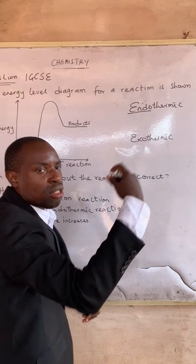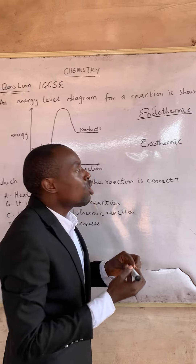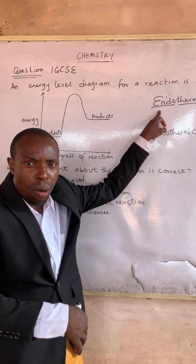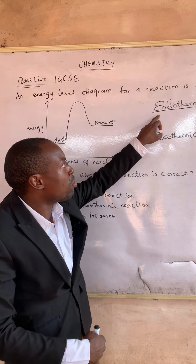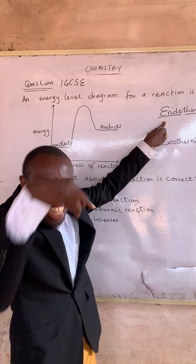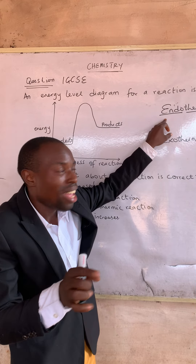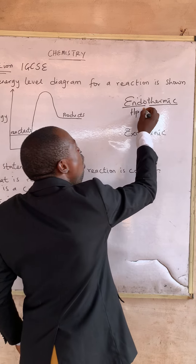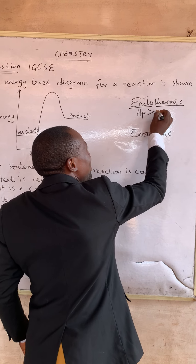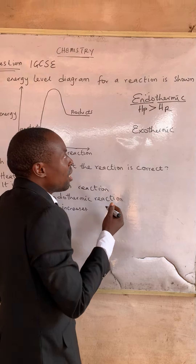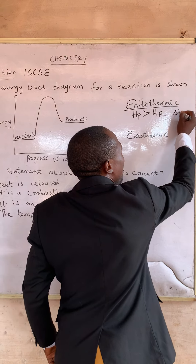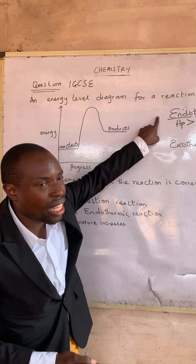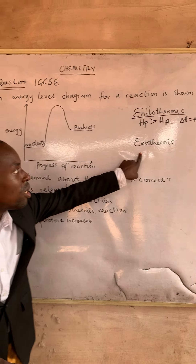Endo simply means absorbed, and thermic means heat. So in the case of an endothermic reaction, heat is absorbed from the surrounding into the system. As such, the energy of the product is always greater than the energy of the reactant, and delta H is positive.